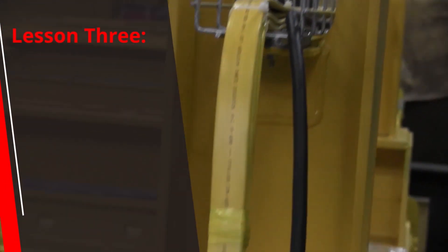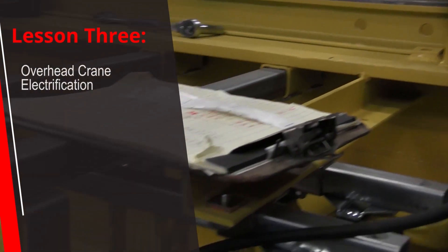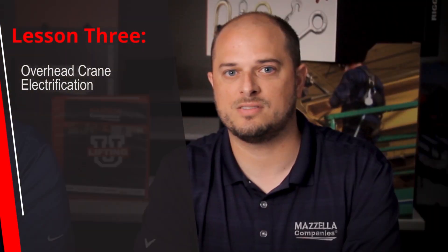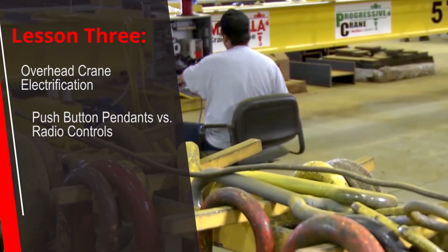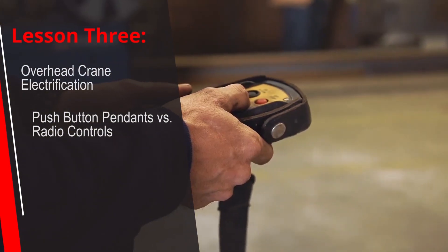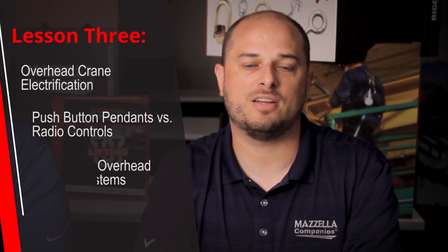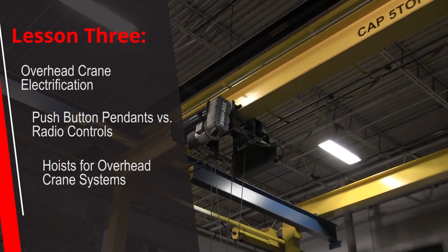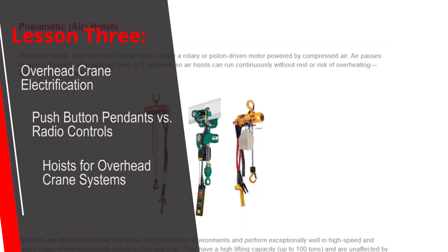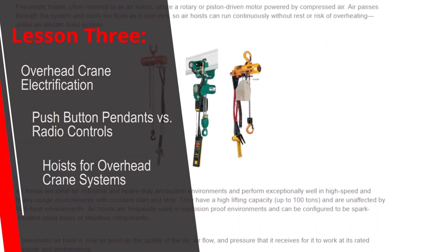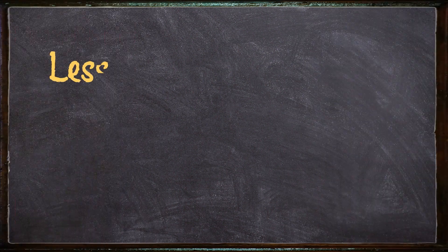Lesson three is overhead crane components. We'll take a look at electrification systems and give a comparison between conductor bars, festooning, and cable reels. We'll take a look at control systems including push button controls and remote radio control systems, and we'll take a look at hoists comparing chain hoists versus wire rope hoists and also take a deeper dive into what a pneumatic hoist system is compared to a manual hoist system versus an electric hoist system.